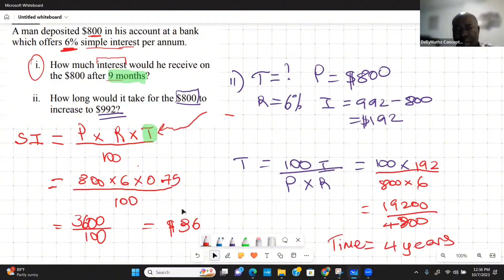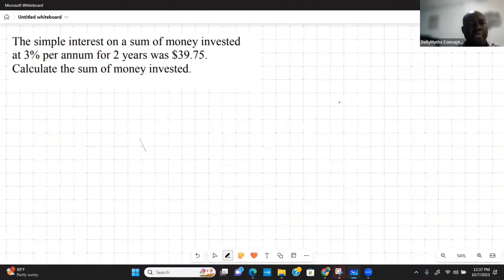Let's see if we look at another question. The question reads as follows: The simple interest on a sum of money invested at 3% per annum for two years was $39.75. Calculate the sum of money invested.